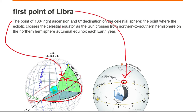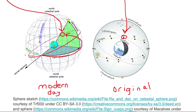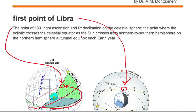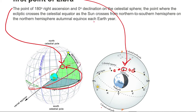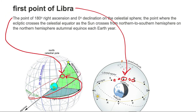Now let's look at the second part of the definition: the point where the ecliptic crosses the celestial equator. We have the ecliptic in red and the celestial equator in green, and we can see they cross here, and on the other side the red and green cross there — so we have two points. The definition also says as the sun crosses from the northern to southern hemisphere on the northern hemisphere autumnal equinox each year. So you're looking for when the sun is going from summer into fall and stopping at the northern hemisphere autumnal equinox — that is the first point of Libra.